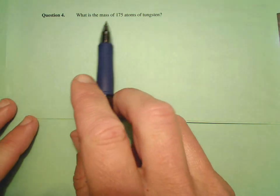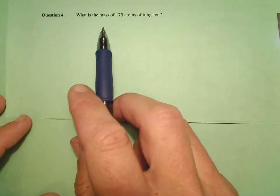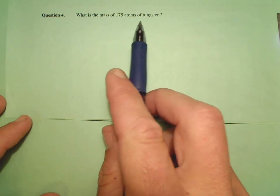Alright, number four here. What is the mass - I didn't specify units - what is the mass of 175 atoms of tungsten?